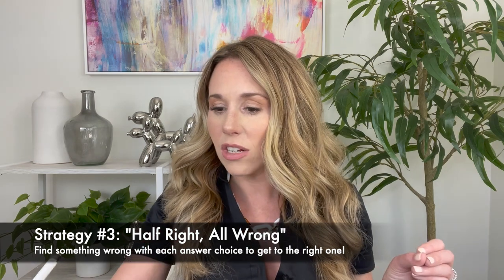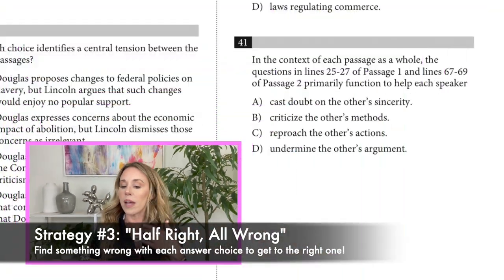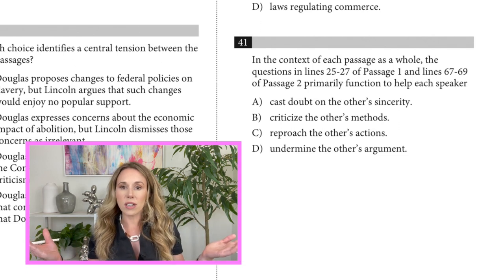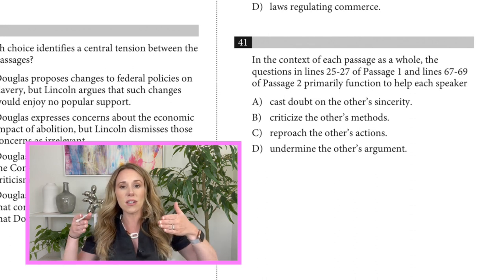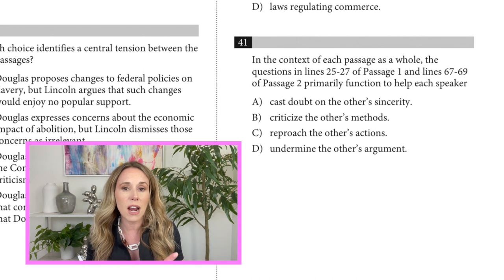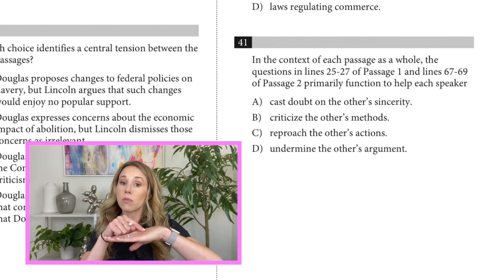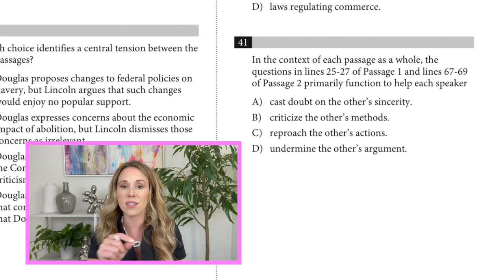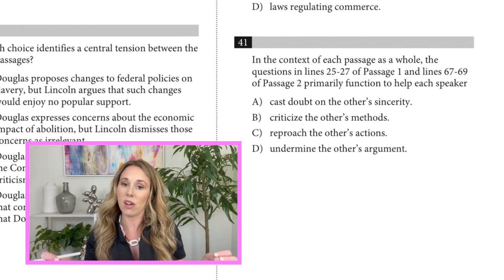The last tip is how to whittle down to the right answer with a strategy called 'if it's half right, it's all wrong.' Sometimes it's easier to comb through the answers and figure out which ones are wrong instead of trying to pinpoint the right one — if you try to zero in on the right answer, you might end up picking a trap answer. What this test does is provide an answer choice where some of it is true and sounds really good, but there might be one word or phrase that's incorrect. Be a detective, figure out which ones are wrong, and you'll get the right answer.